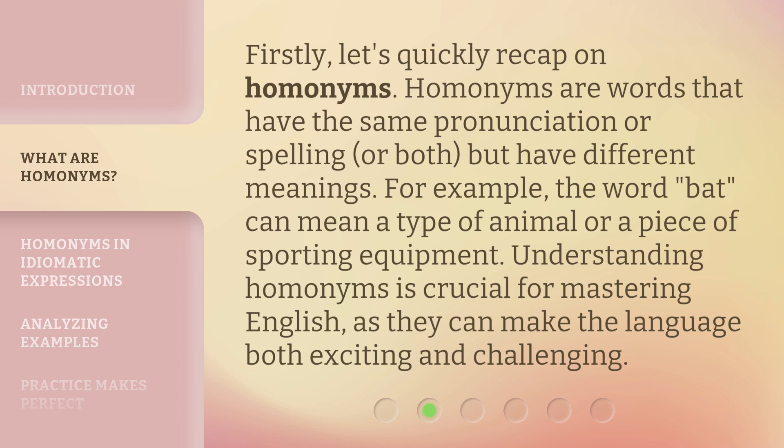Firstly, let's quickly recap on homonyms. Homonyms are words that have the same pronunciation or spelling, or both, but have different meanings. For example, the word 'bat' can mean a type of animal or a piece of sporting equipment. Understanding homonyms is crucial for mastering English, as they can make the language both exciting and challenging.